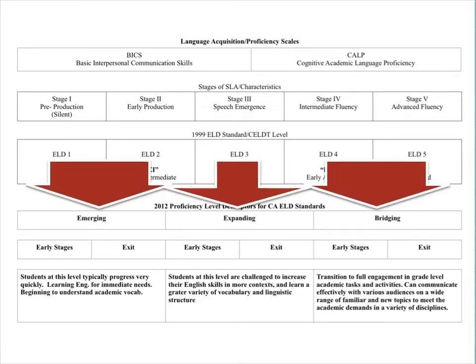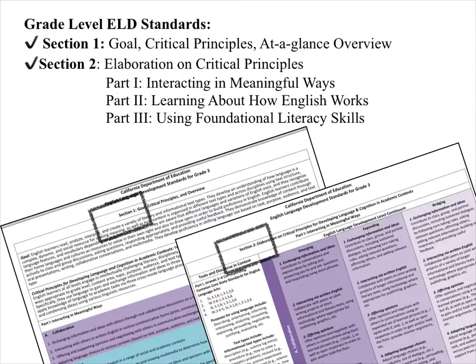At the risk of oversimplifying — because it's not a clear-cut alignment — we might be able to look at ELD ones and twos from the CELDT as students at the emerging level, the ELD threes as students at the expanding level, and the ELD fours and fives as students at the bridging level.